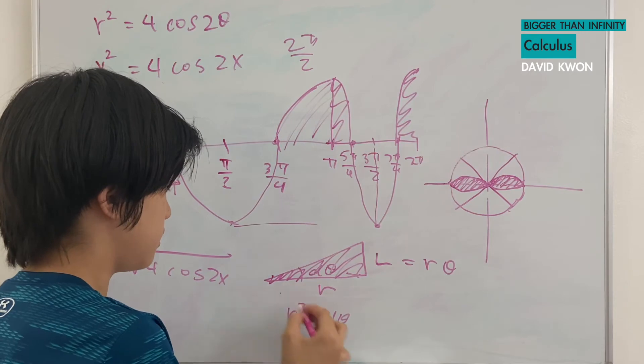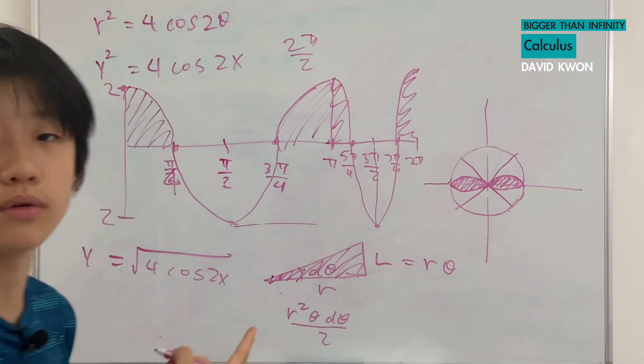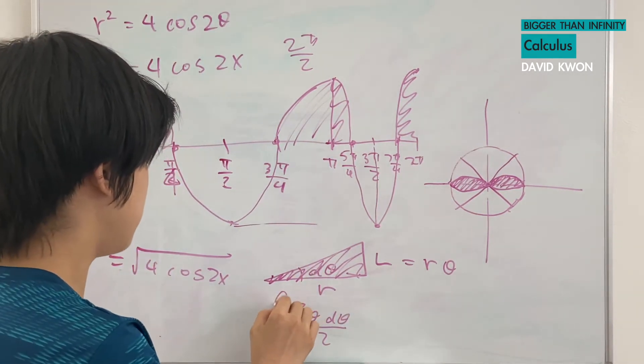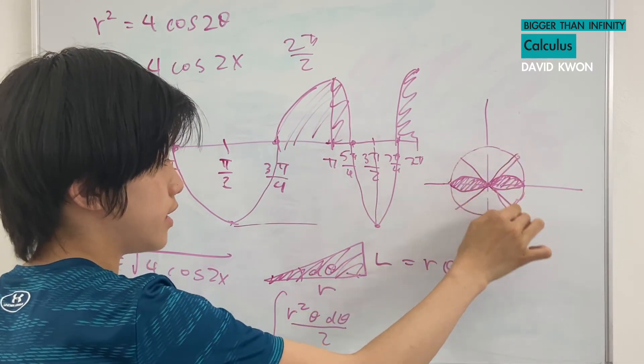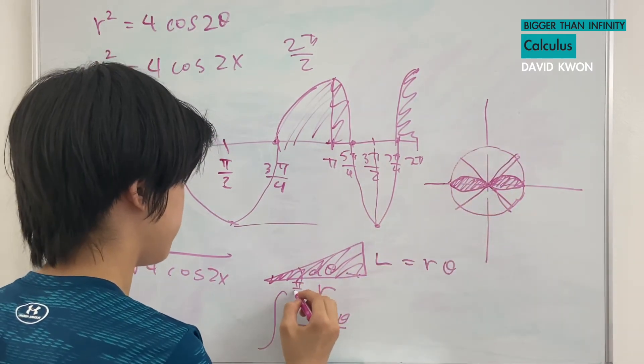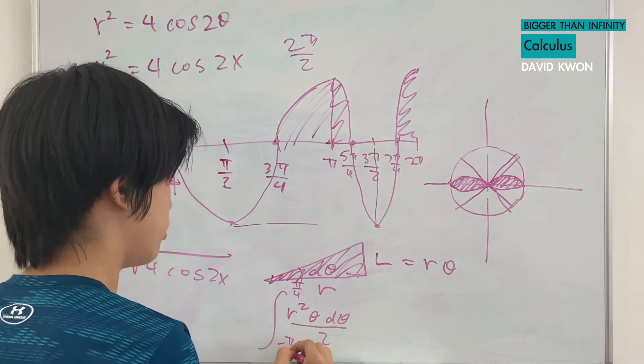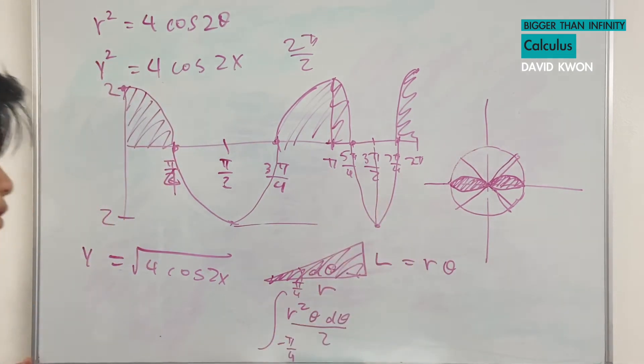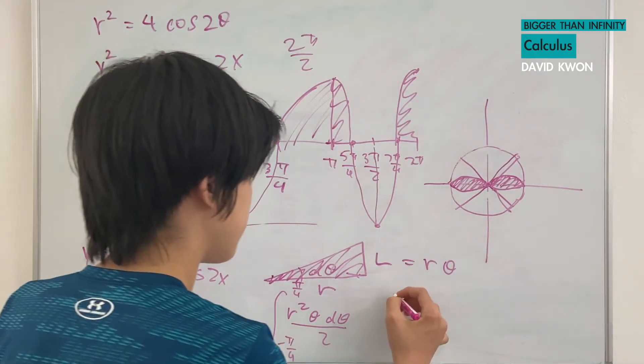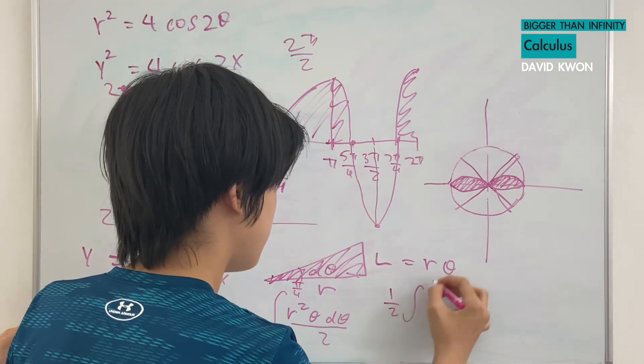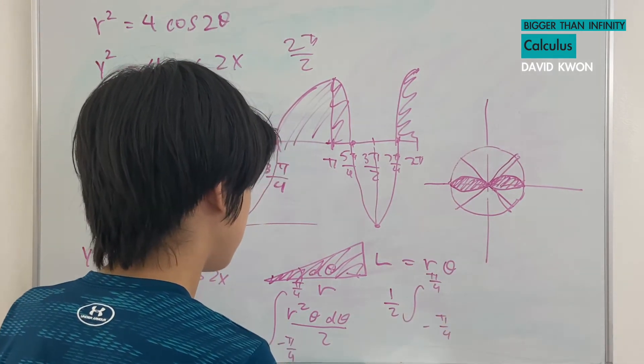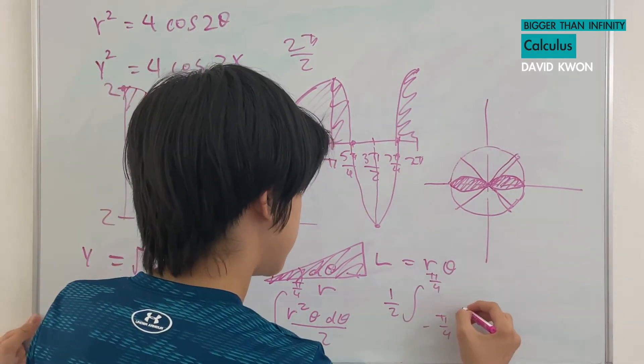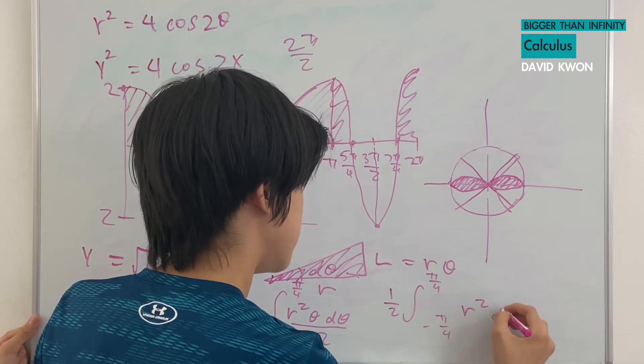Now, we have the area divided by 2 because it's a triangle. And we have the interval from π over 4 to negative π over 4. And we will multiply the 2 at the end. And the 1 over 2 can come up front. From π over 4 to negative π over 4.